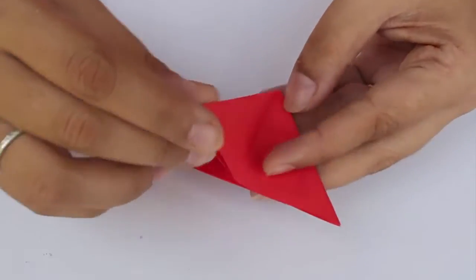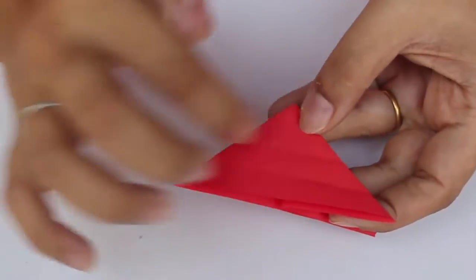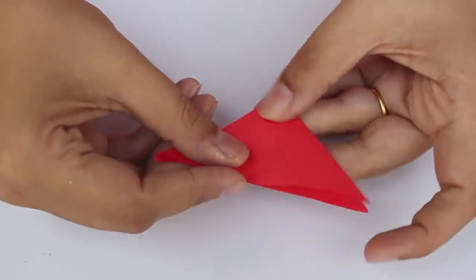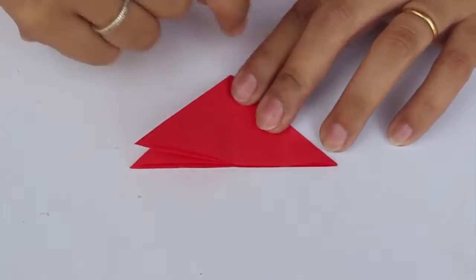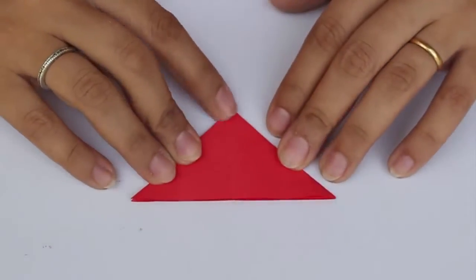If you find that your creases look like this, all you need to do is turn it over. This is how your model should look. Now again, if you look at this like a mountain, the peak of the mountain will meet the base of the mountain like this.